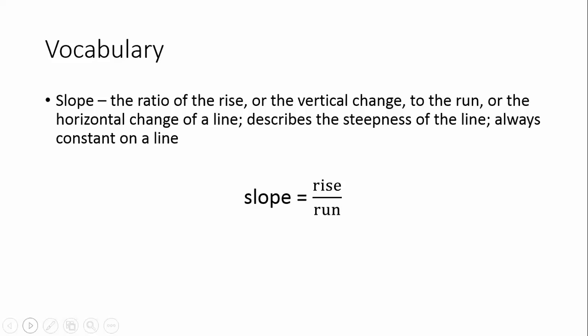First let's look at the definition for slope. The slope is the ratio of the rise, or the vertical change, to the run, or the horizontal change, of a line. Basically what it does is it describes the steepness of the line. And for a line, it's always constant, no matter which portion or part of the line you're focusing on.